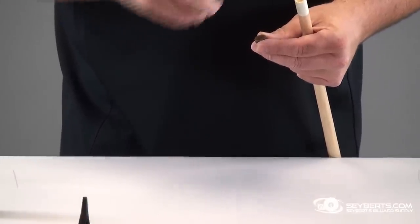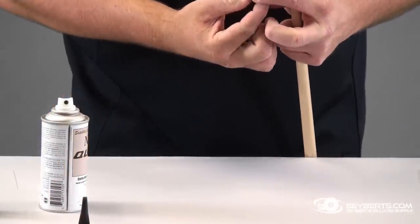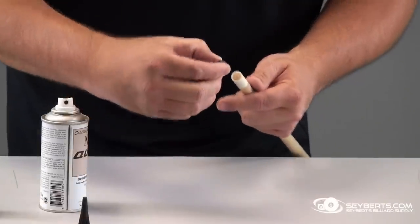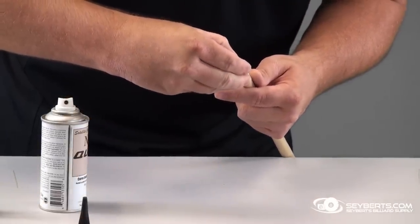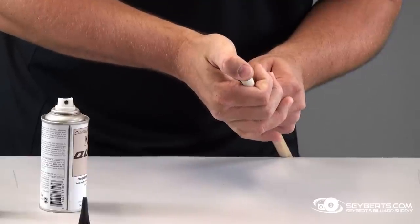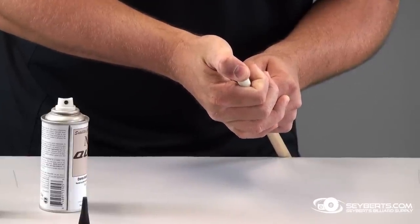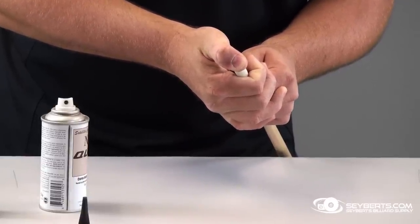Then you want to take the accelerator that comes with the kit and spray it on the ferrule. What that does is create a heck of a bond, so when you put these two together, you really want to make sure you get it lined up because there's no other chance - I mean, that's it. Apply a little pressure with your thumb.